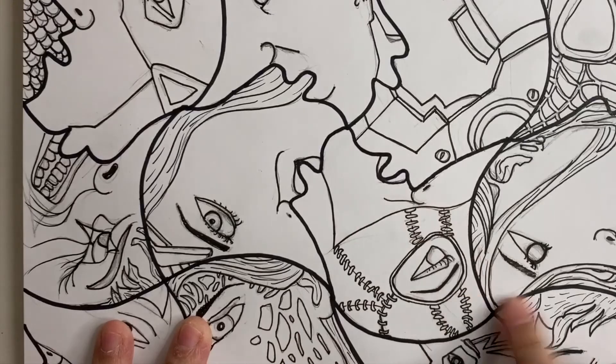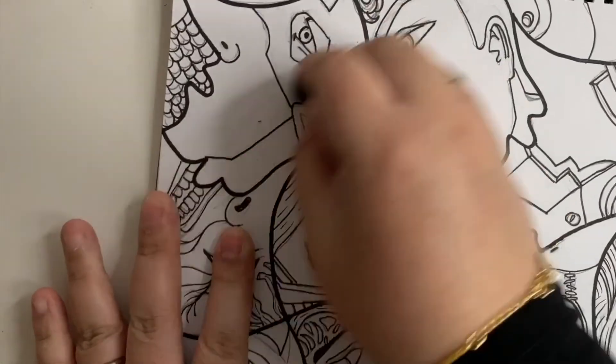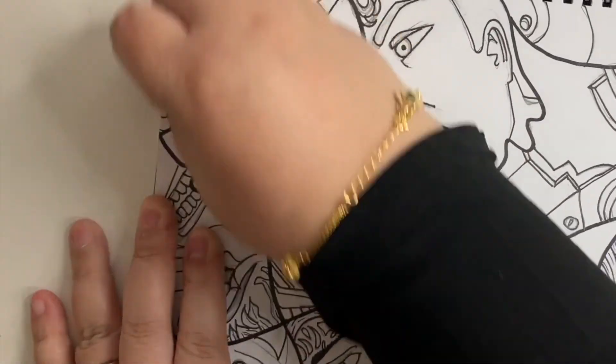After you are done with all the outline work, you can start erasing your pencil lines before coloring them.